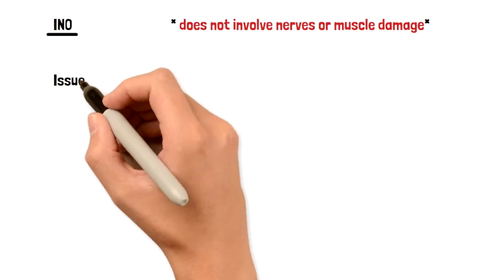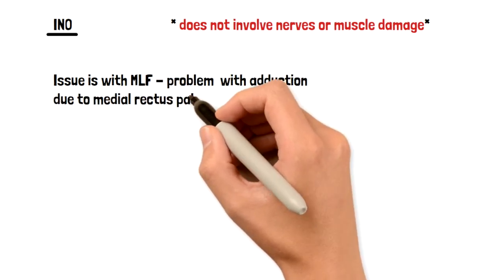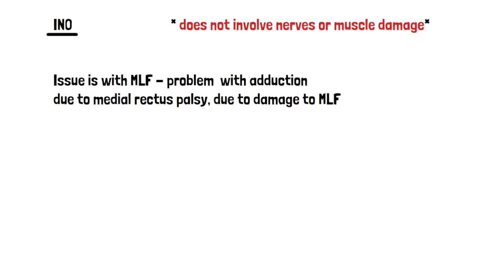INO, I want to reiterate, is not any damage to any nerves or muscles in this cascade. The damage is specifically from the MLF not working. And because MLF is in the middle of that cascade, if MLF doesn't work that signal cannot transmit completely through.